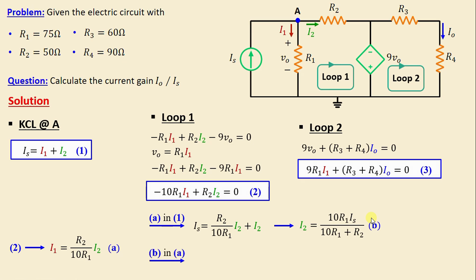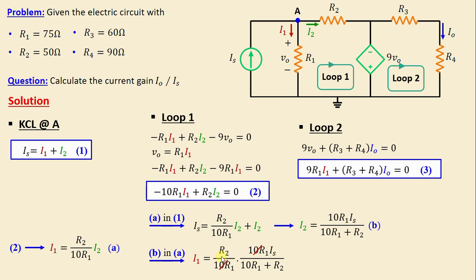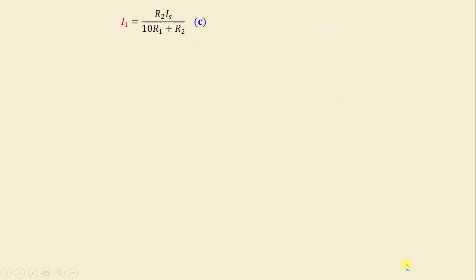Substituting B into A, we obtain: I1 = (R2 / 10·R1) × (10·R1·IS) / (10·R1 + R2). The 10·R1 terms cancel, giving: I1 = (R2·IS) / (10·R1 + R2). We'll call this Equation C.